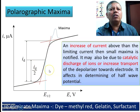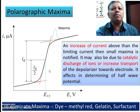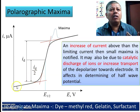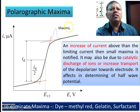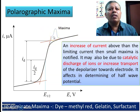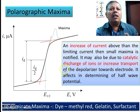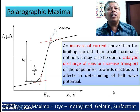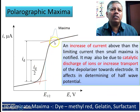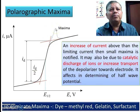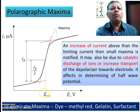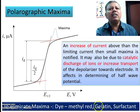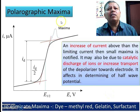An increase in current above the limiting current sometimes produces small maxima in the polarogram. These maxima are not included in the analysis; they may be due to catalytic discharge of ions or increased transport of the depolarizer towards the electrode. The maxima affect determination of the half-wave potential because it becomes difficult to calculate the diffusion current ID. To eliminate maxima, we can add a dye like methylene indicator, gelatin, or a surfactant to the solution, which reduces the maxima to an acceptable level.